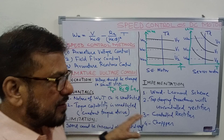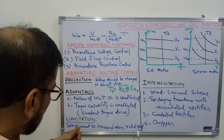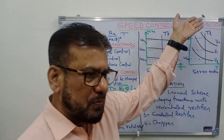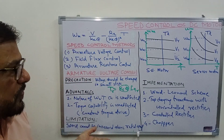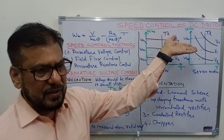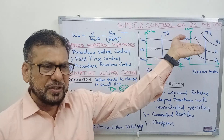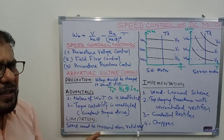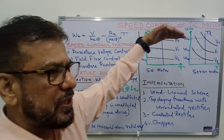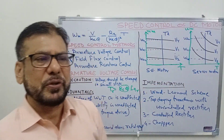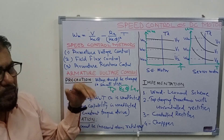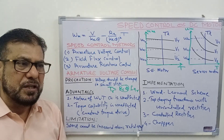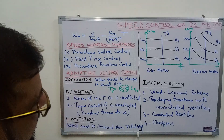That is why this method is the most commonly used method. The limitation is that you cannot increase the speed above the rated speed, because you cannot raise the voltage substantially above the rated voltage — perhaps only 10–20% at most. So speed control above rated speed cannot be achieved with this method; you must consider another approach.